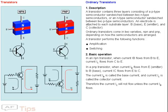In an NPN transistor, when current IB flows from B to E, current IC flows from C to E. In a PNP transistor, when current IB flows from E (emitter) to B (base), current IC flows from E to C. The current IB is called the base current, and current IC is called the collector current. Therefore, the current IC will not flow unless the current IB flows.